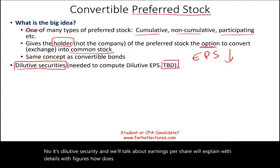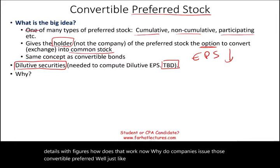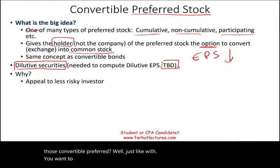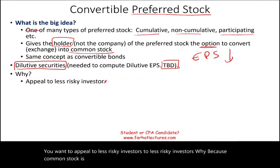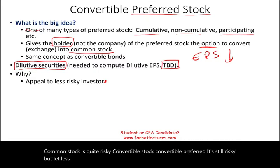Why do companies issue convertible preferred? Just like with bonds, you want to appeal to less risky investors. Common stock is quite risky. Convertible preferred is still risky, but less risky than common stock. It is even riskier than convertible bonds, but less risky than common.